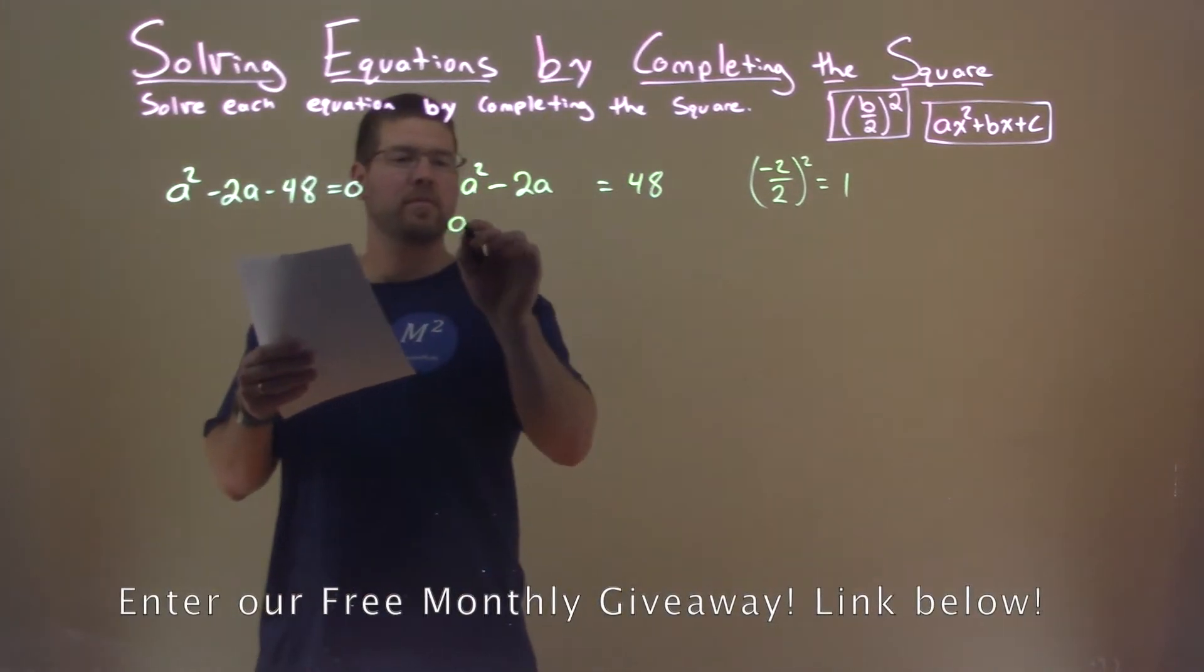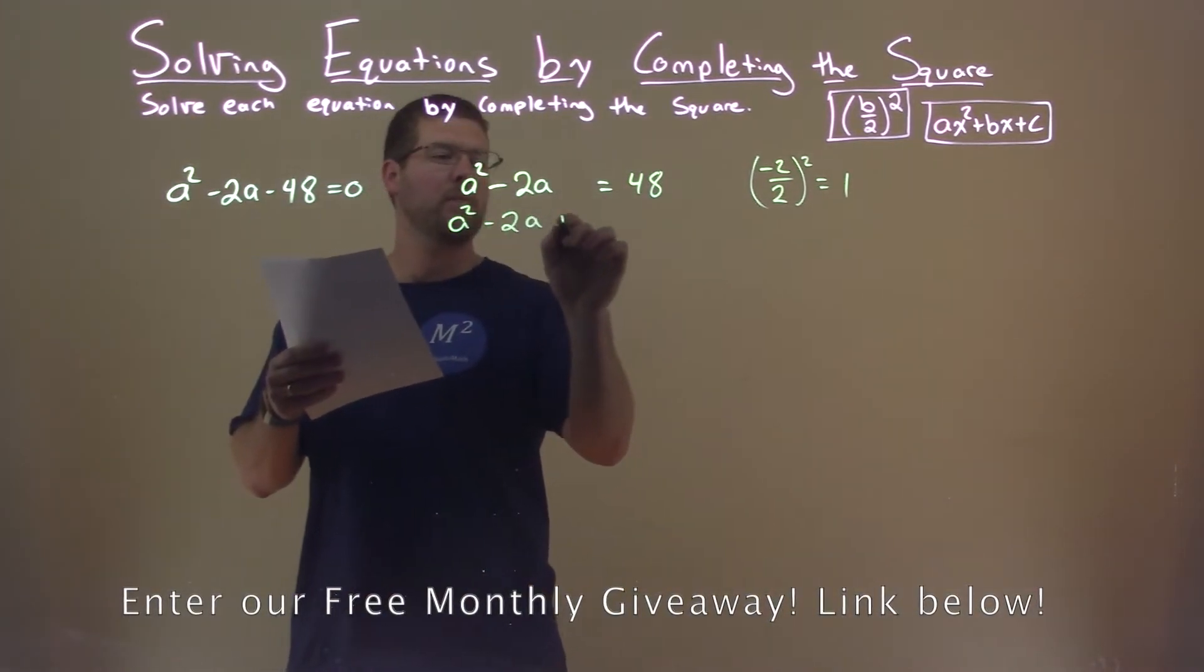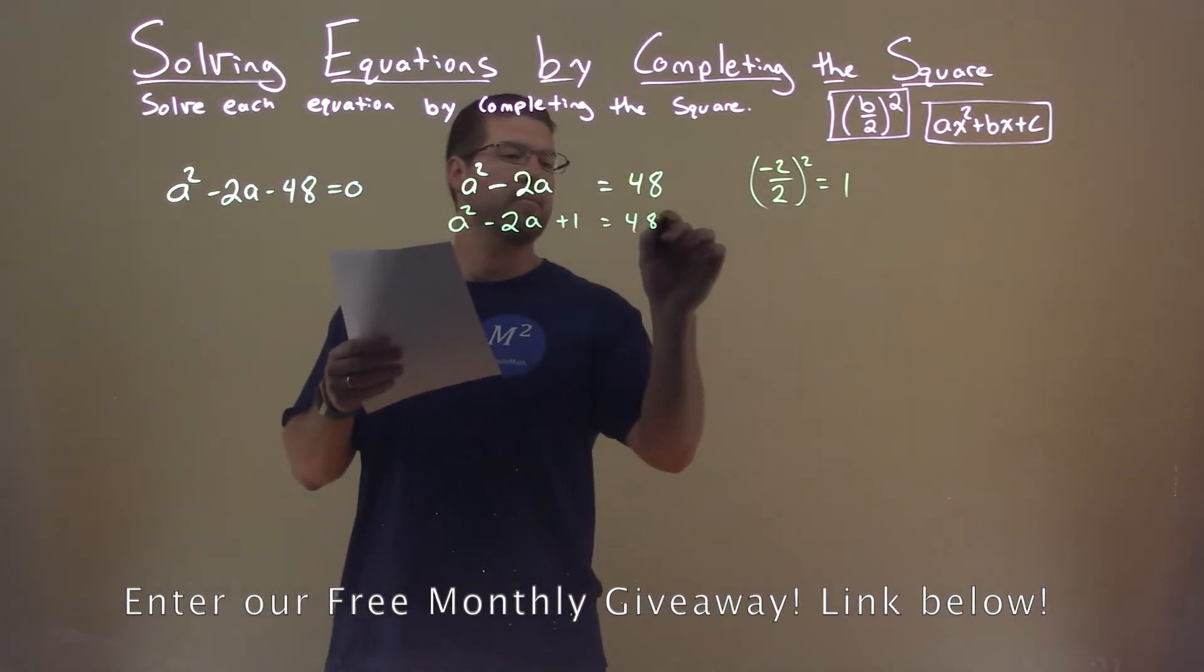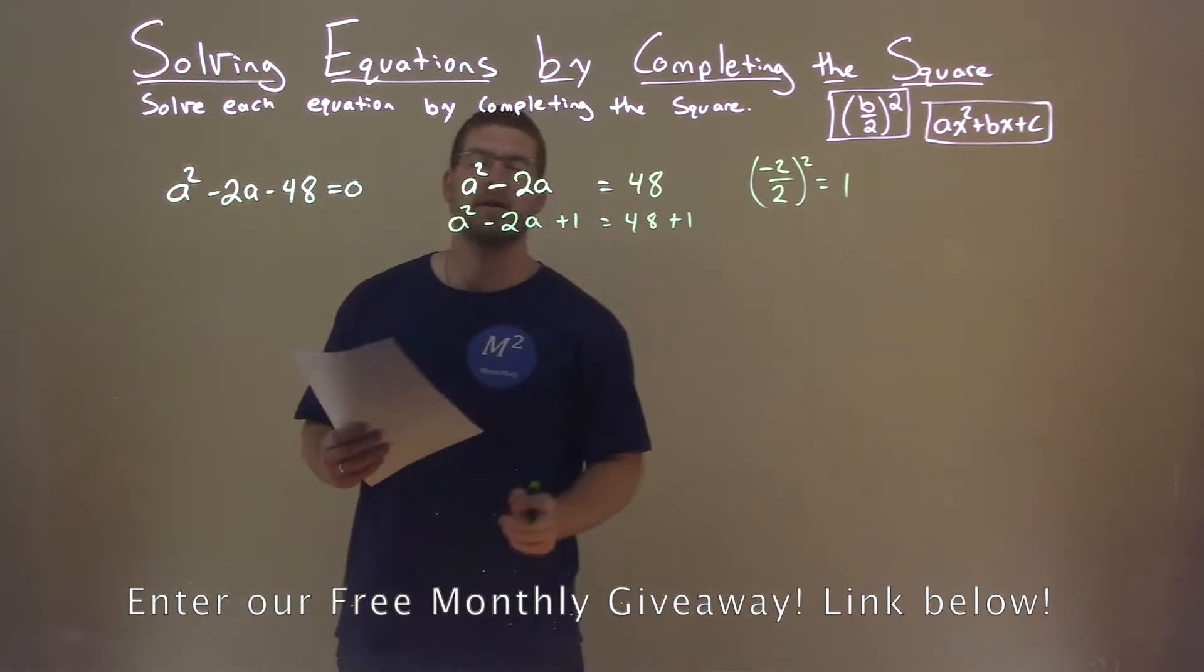So now I'm going to rewrite my equation, a squared minus 2a plus 1 equals 48 plus 1. I'm going to add that plus 1 to both sides.